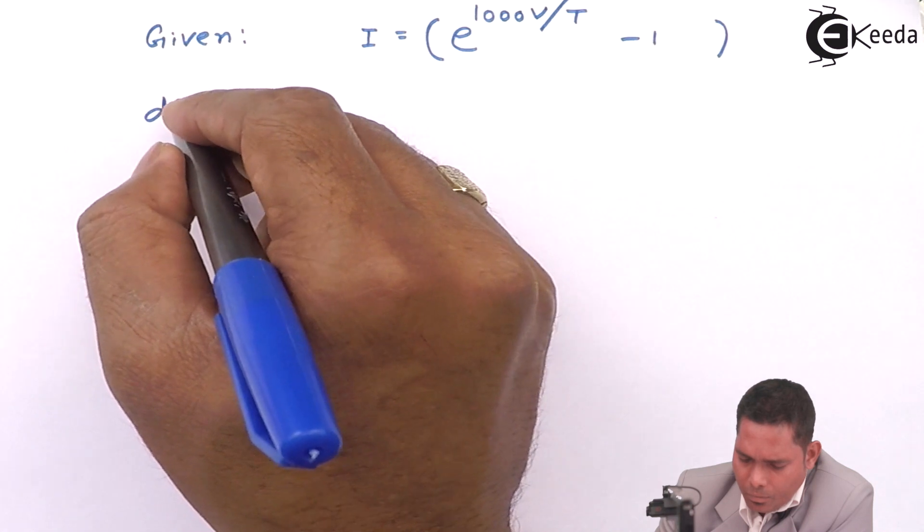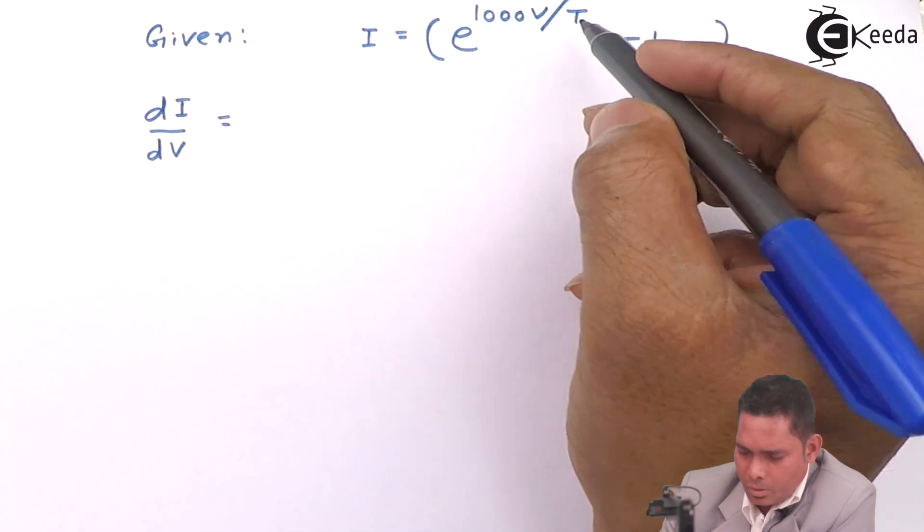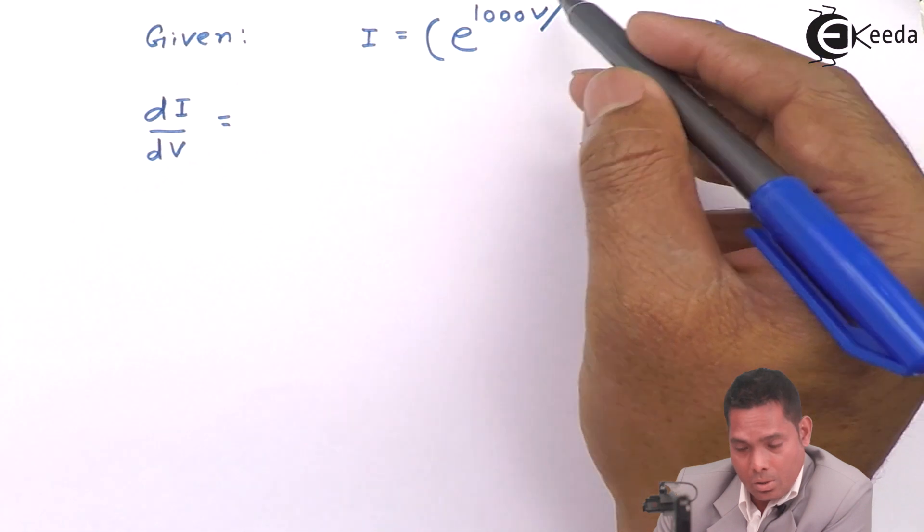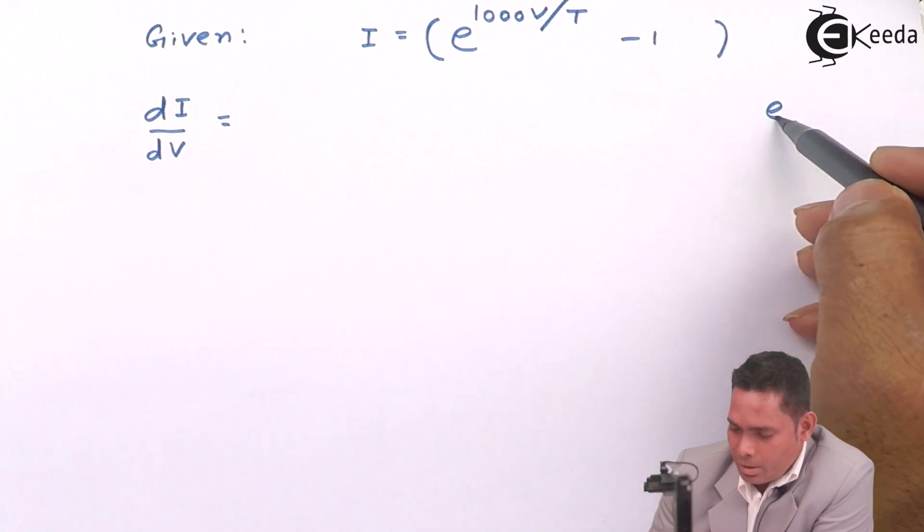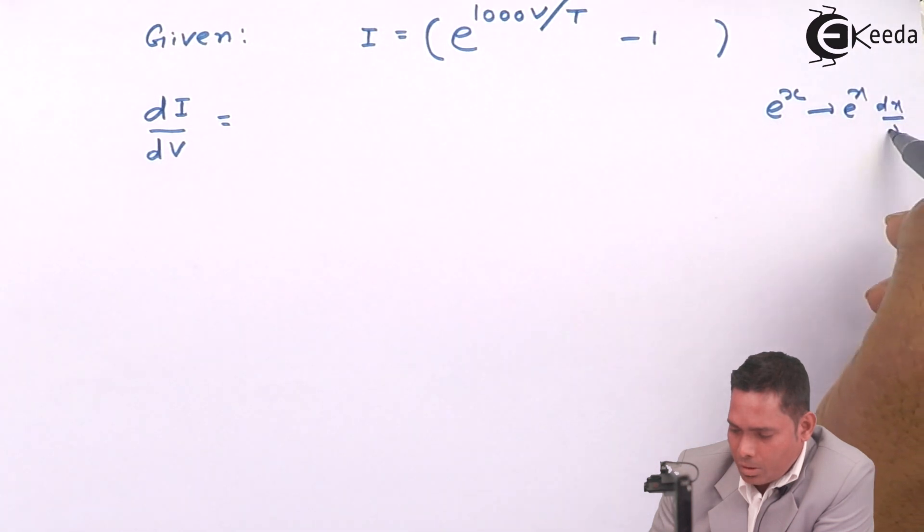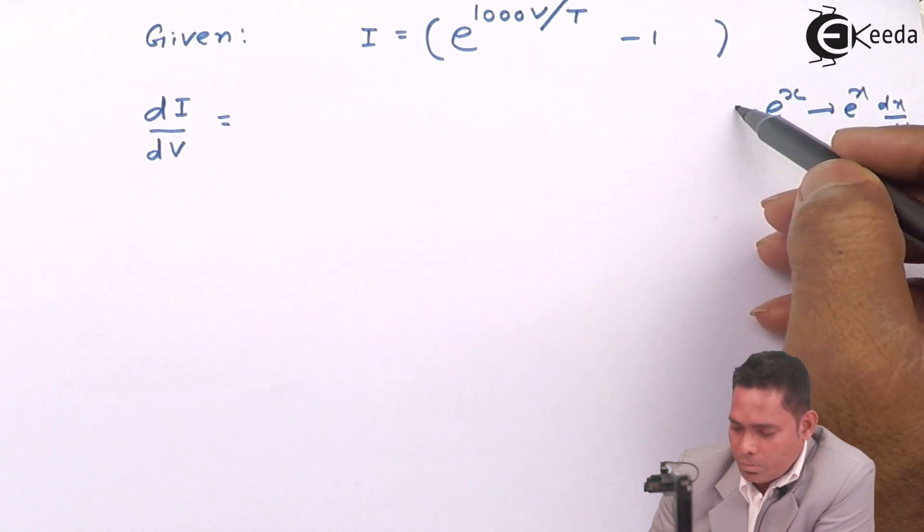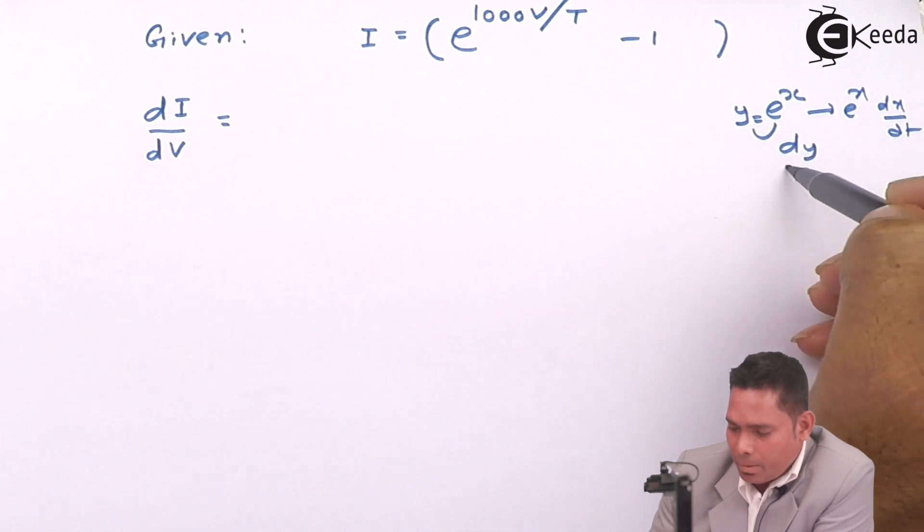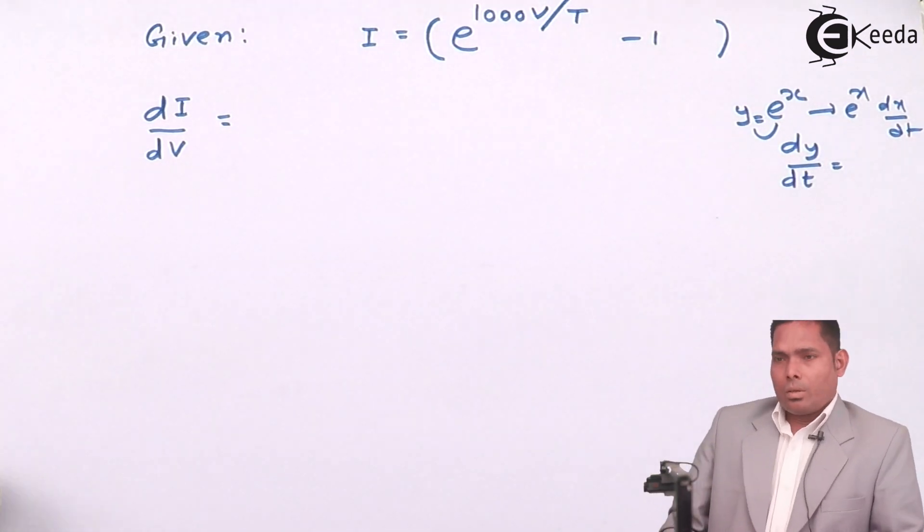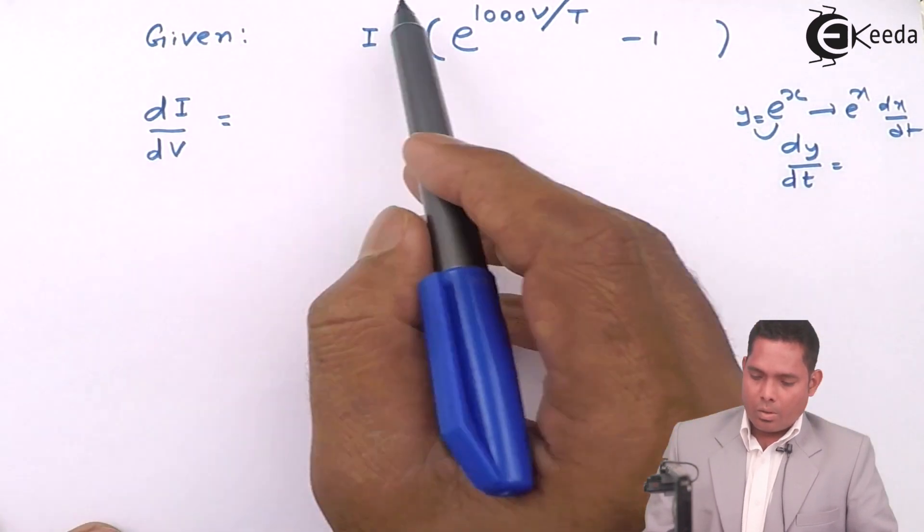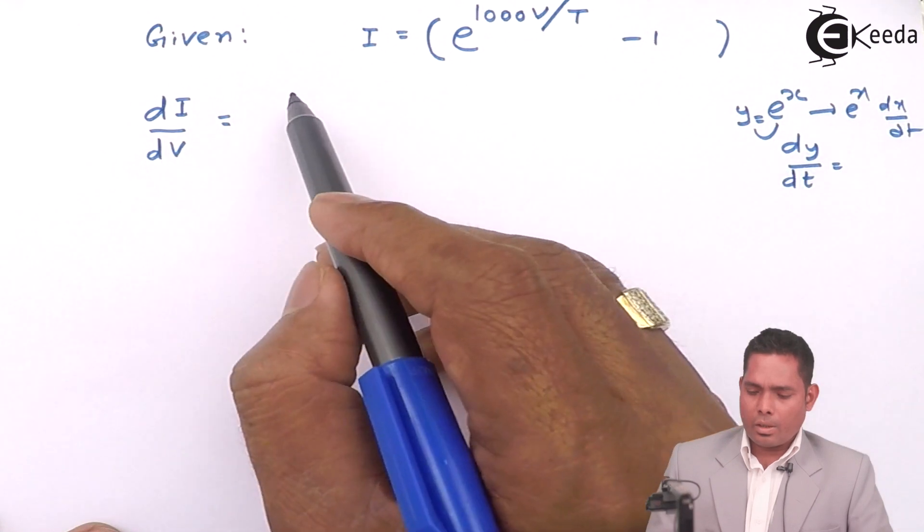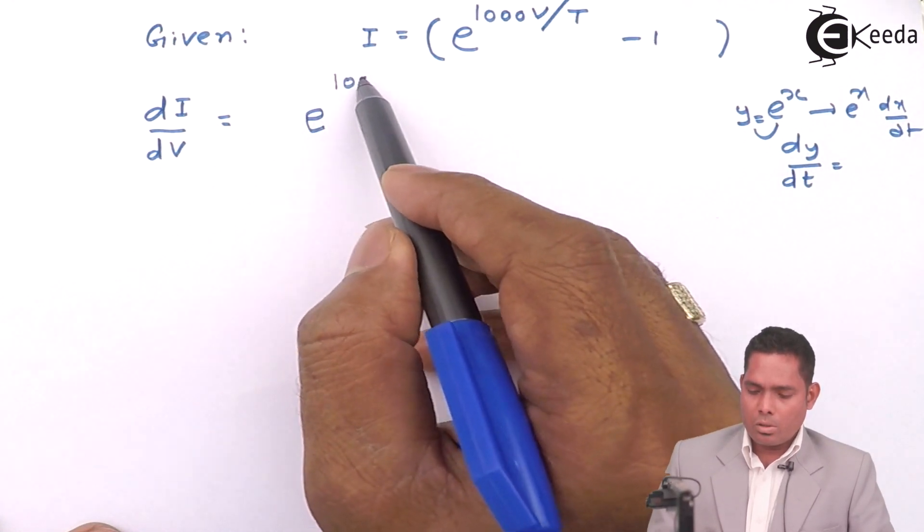If I differentiate this equation with respect to voltage, I will get dI/dV. I will differentiate this function - this is a constant so it will be 0. Differentiation of e raised to something - you know that e raised to x, its derivative will also be e raised to x times dx.